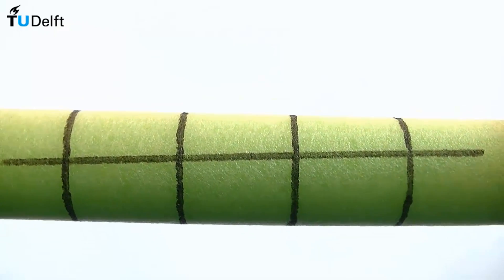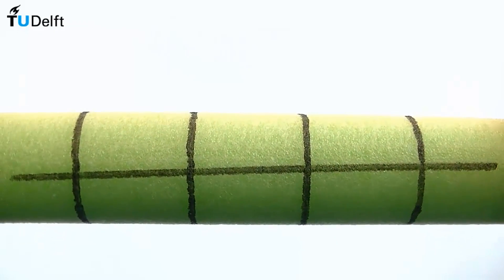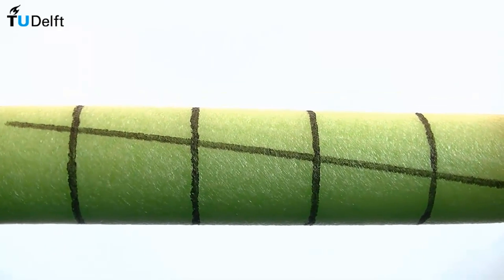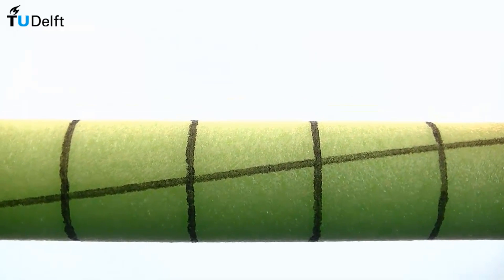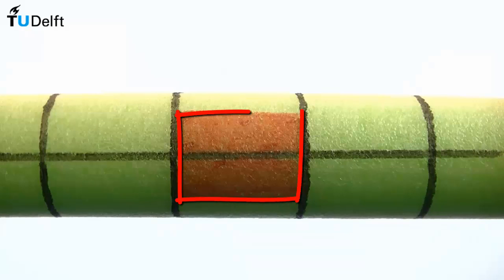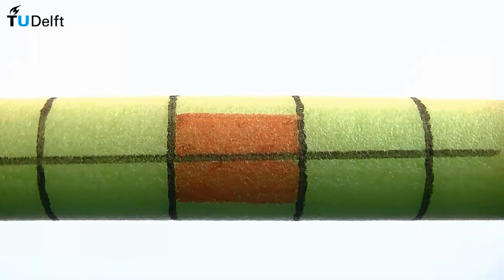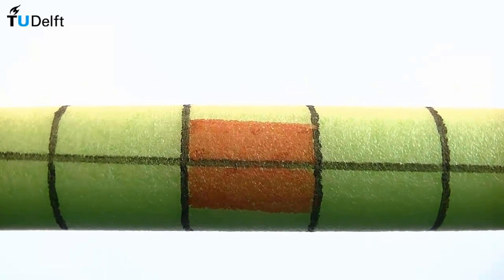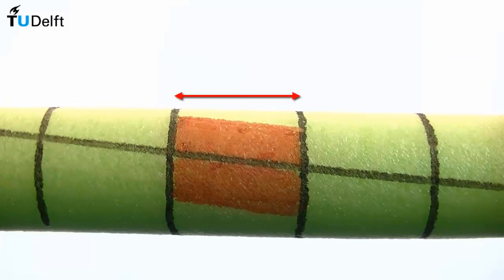Observe what happens to these lines when subjected to an alternating twisting moment. Two observations can be made. First, the circumferential lines rotate but do not displace or distort. Secondly, the line along the axis of the tube rotates through an angle but remains straight. By adding two more lines to the surface of the tube, a rectangular element can be defined. As the lengths at the side of the element do not change, it can be concluded that the element does not experience any normal strains. However, the element does rotate through an angle, just as a square element subjected to pure shear would.